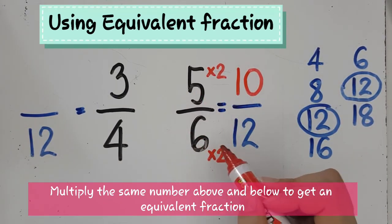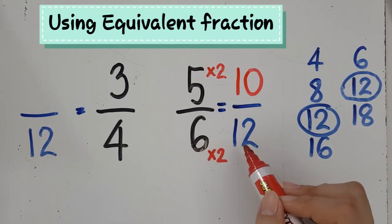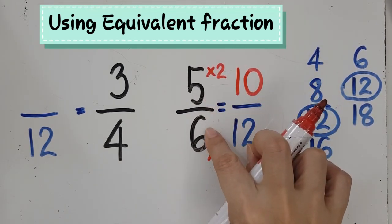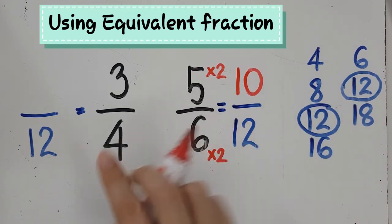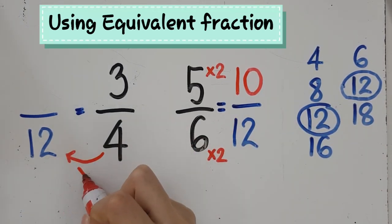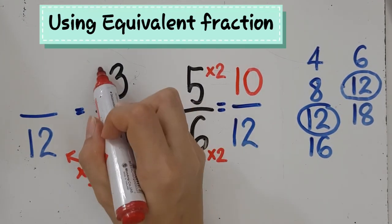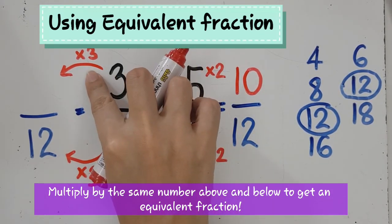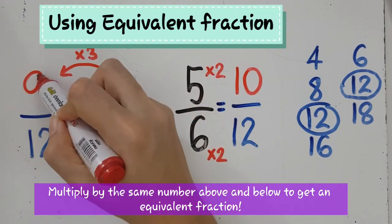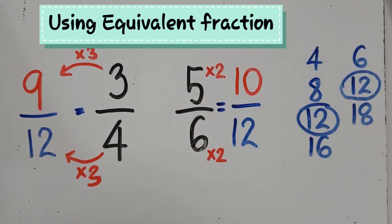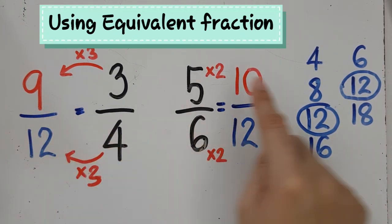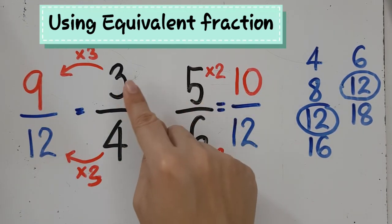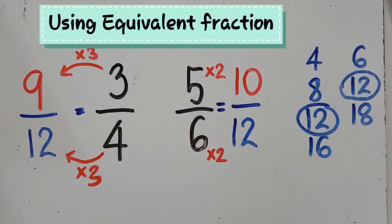Remember, these two fractions have the same value because they are equivalent — they show the same amount, just with a different name. Instead of calling it five-sixths, I can call it ten-twelfths. Now, for three-fourths: how do we get from three-fourths to something-twelfths? I multiply by three — four times three is twelve, and three times three is nine. So three-fourths equals nine-twelfths. Now, nine-twelfths and ten-twelfths: ten-twelfths is more than nine-twelfths. So five-sixths is more than three-fourths. And we are done!